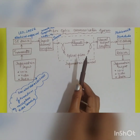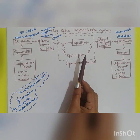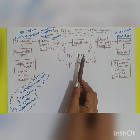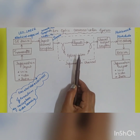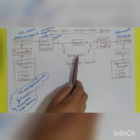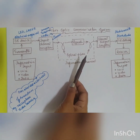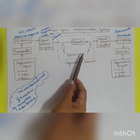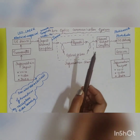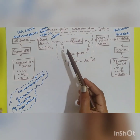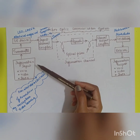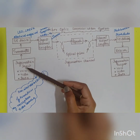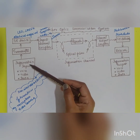Fiber optics are cylindrical, hair-like transparent fibers, and they can be guided or unguided. In this fiber optic communication system, the first topic we are going to study is the block diagram. The block diagram of the fiber optic communication system mainly starts with the information input.